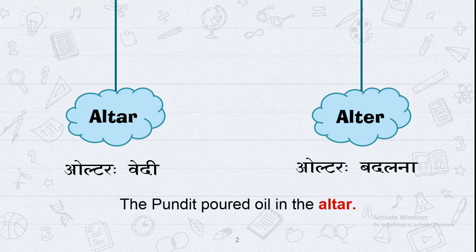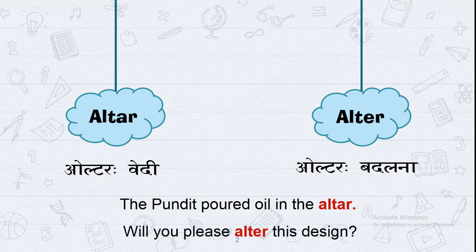Let us see the examples. 'The Pandit poured oil in the Altar.' So the Pandit poured oil in the Havan Vedi. While the second: 'Will you please alter this design?' — meaning, will you change this design. So the first, Altar, is Havan ki Vedi, and the second, Alter, means Badal — to change.